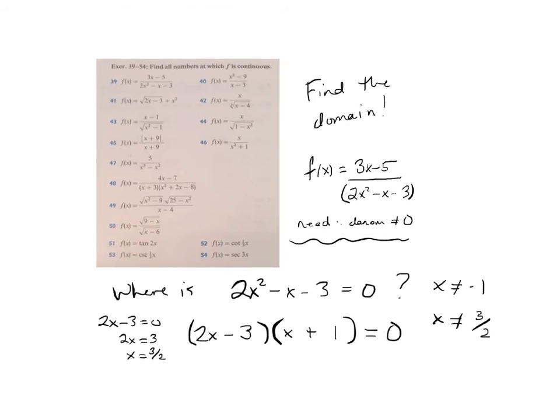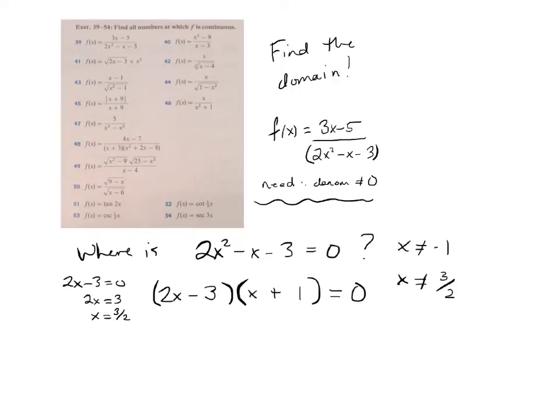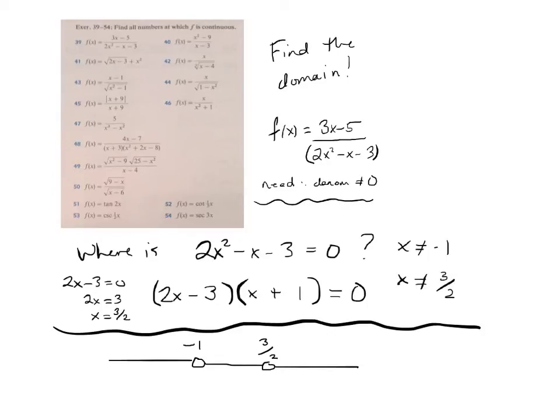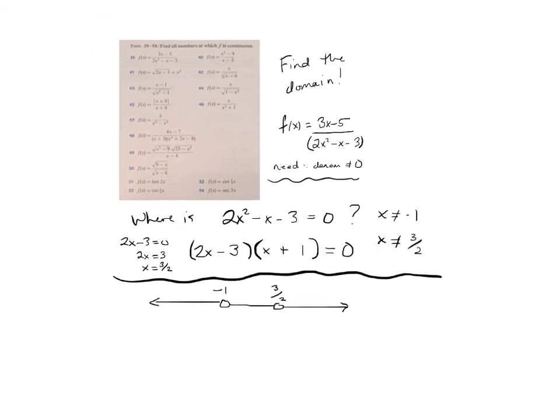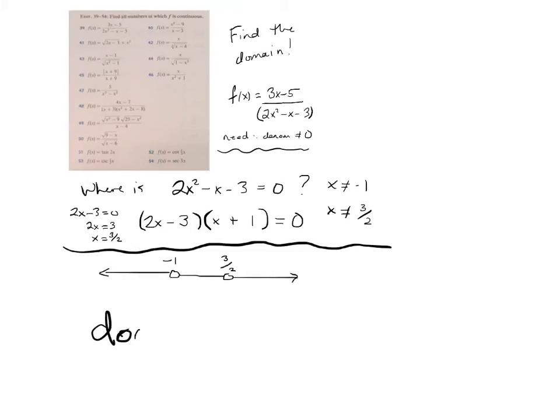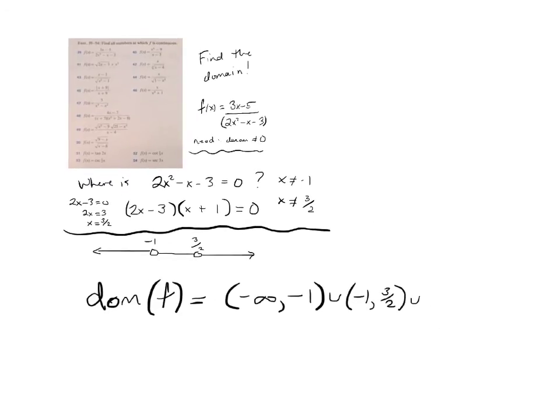So x is not equal to 3 over 2. Now, how are you in translating this information into interval notation? I'll just draw a number line for the sake of drawing a number line. Maybe the viewer will be benefited. I'm drawing big fat holes because that's where they're not. So, it's going to be negative infinity to negative 1 non-inclusive. And then union negative 1 to 3 halves, non-inclusive. And then union 3 halves to infinity.